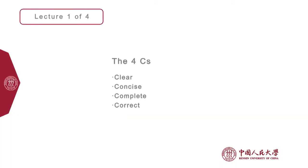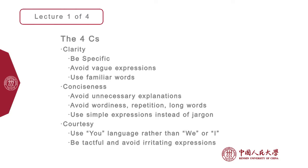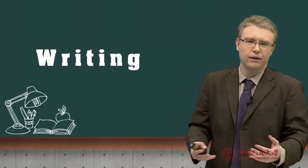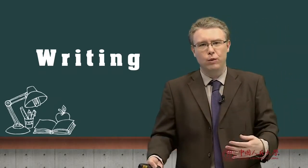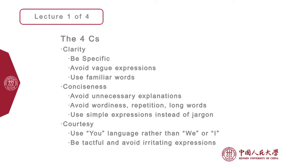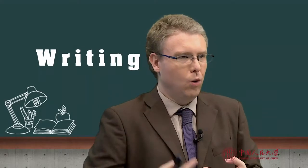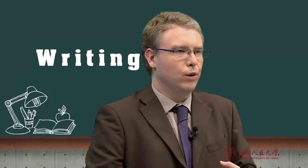When you're writing, think about the four C's: clear, concise, complete, and correct information has to be in your emails at all times. Clarity — be specific, don't be too general, avoid vague expressions, use familiar words, don't blind people with acronyms and jargon. Conciseness — avoid unnecessary explanations, don't talk down to people, avoid wordiness, repetition, and long words. This will always work against you — you're not helping the situation if no one can understand what your email is about.